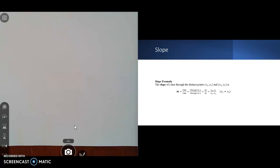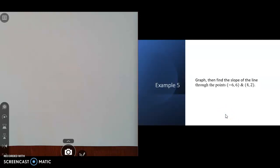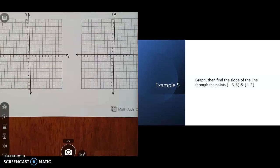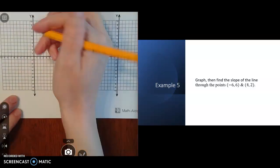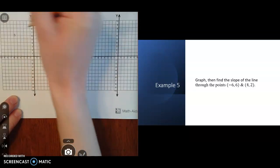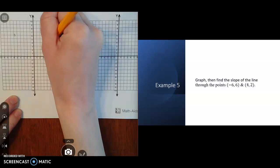Let's try one. We're going to graph and then find the slope of a line through the points (-6, 6) and (4, 2). Let's get our graph out. The point (-6, 6) would be right here. The point (4, 2) would be over here. This is our line.